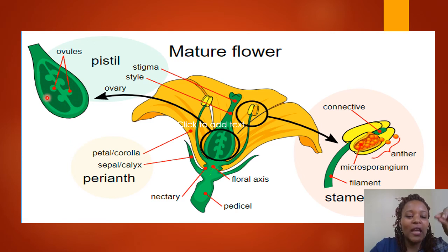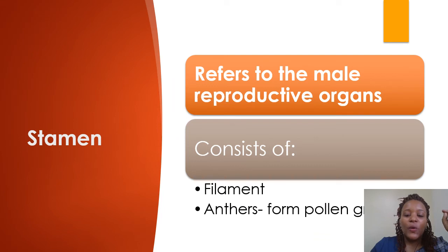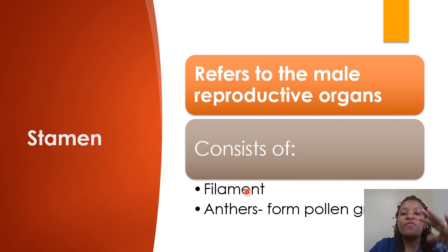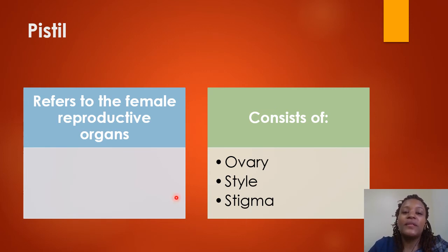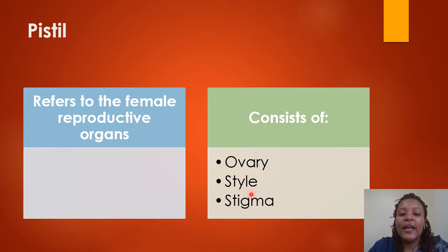The stigma, style, and ovary make up the pistil. This part shows you what is contained in the ovary — these are ovules. Ovules are normally contained in the ovary. In summary, the stamen refers to the male reproductive organs and consists of the filaments and the anthers. The anthers produce the pollen grains. The pistil refers to the female reproductive organs and consists of the ovary, the style, and the stigma.